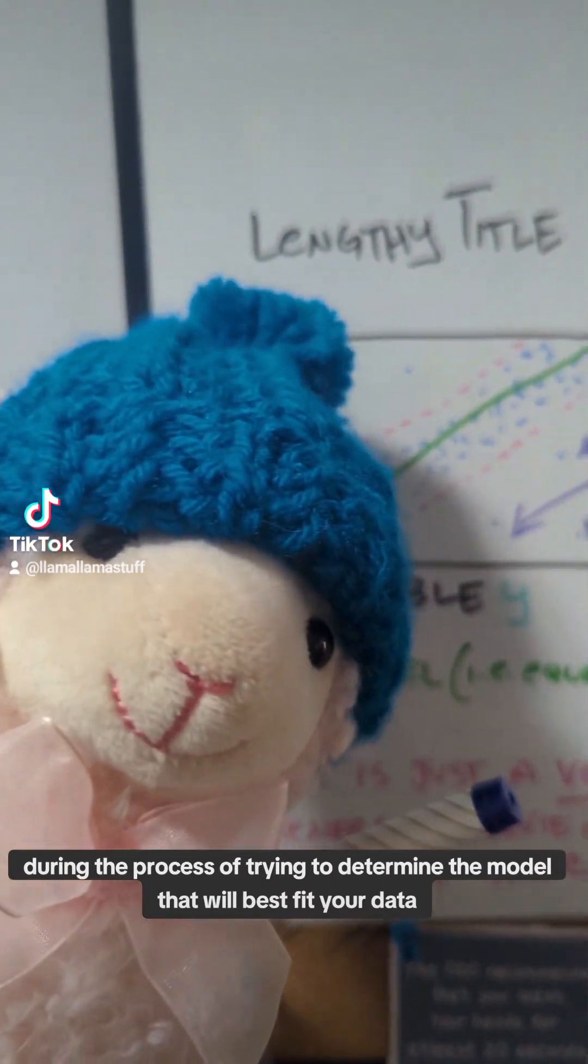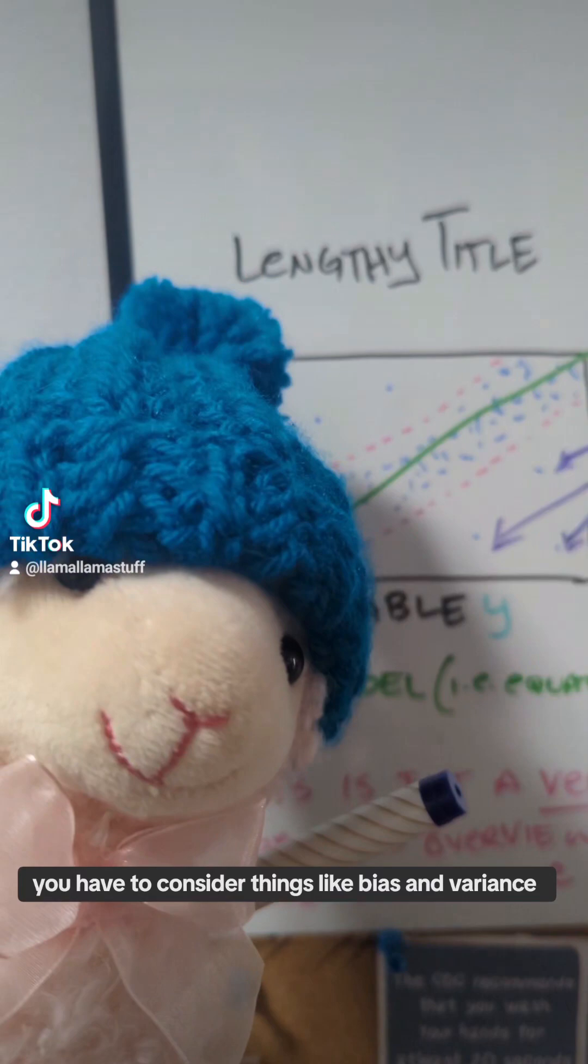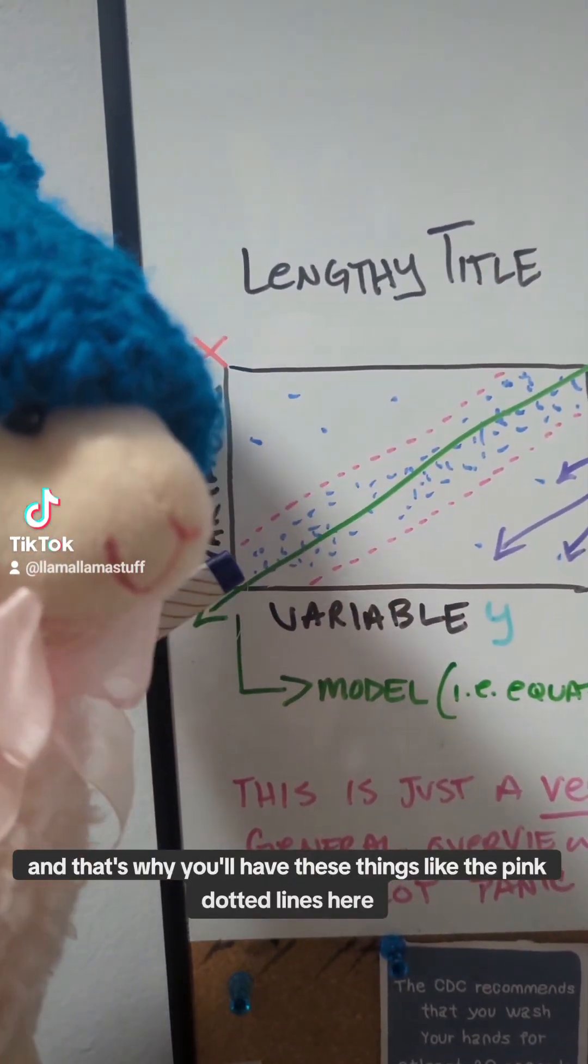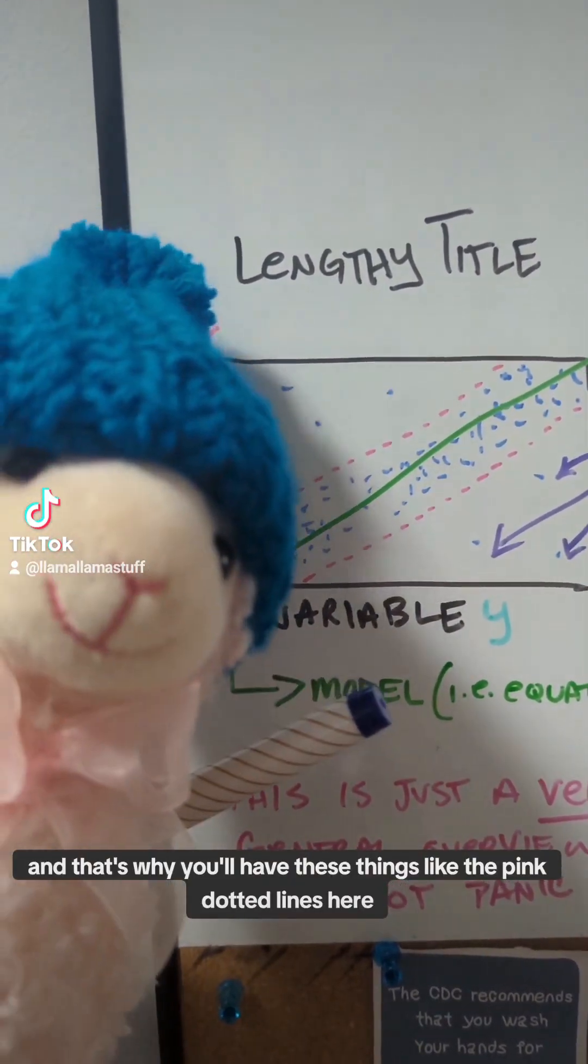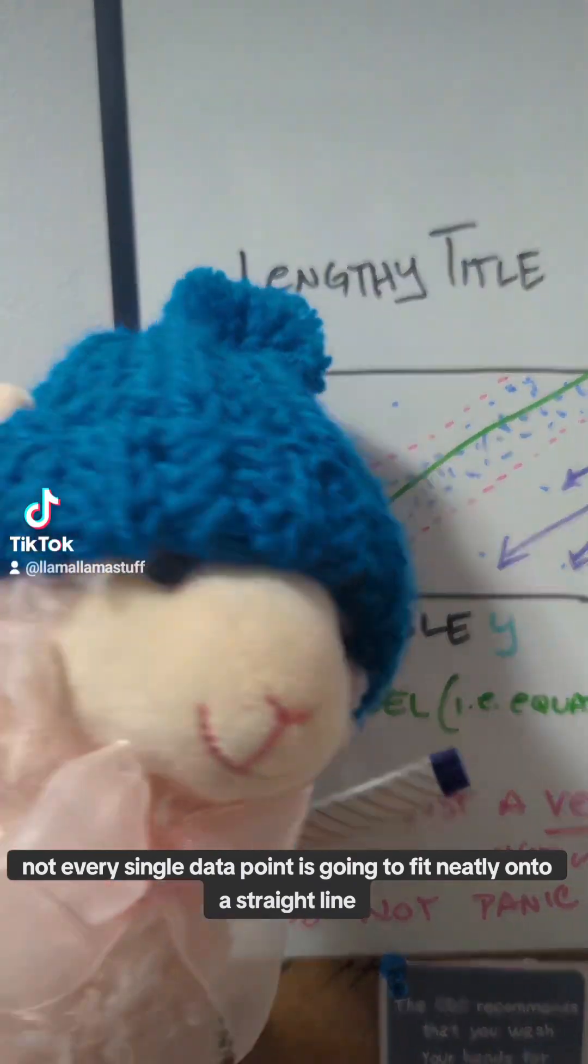During the process of trying to determine the model that will best fit your data, you have to consider things like bias and variance, and that's why you'll have these things like the pink dotted lines here because obviously not every single data point is going to fit neatly onto a straight line.